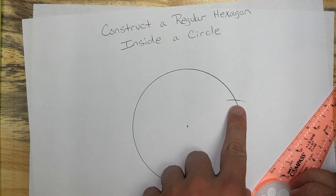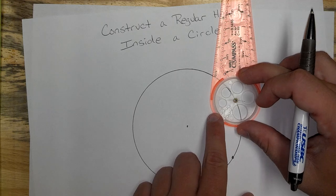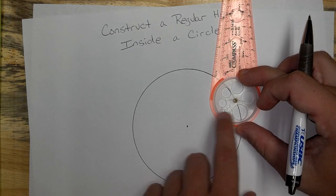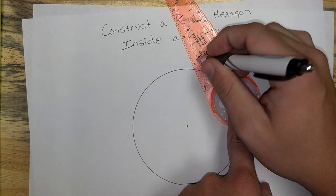Now use that new cross right there and keep going around the circle, remembering to use that same setting that you used to create the circle. For me, it was the 2-inch hole.